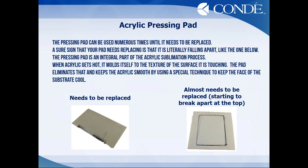The reason we have to have the pressing pad is that when acrylic gets warm, it will mold into whatever surface it touches. We have to get the acrylic hot enough to sublimate it. What that pressing pad does is keep the face of the acrylic cool enough so it will not take any texture, keeping it smooth so that when you take it out of the press, it has that nice gloss finish without any divots. So we would not put a piece of paper against the glossy side of the acrylic — what goes against the glossy side is the acrylic pressing pad.